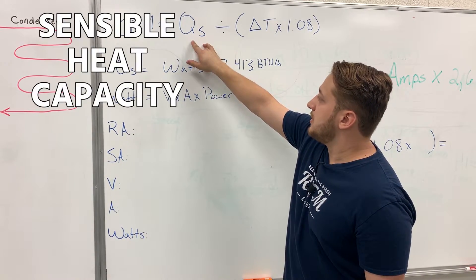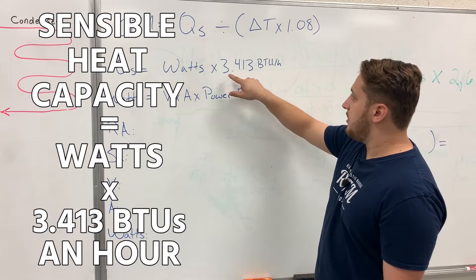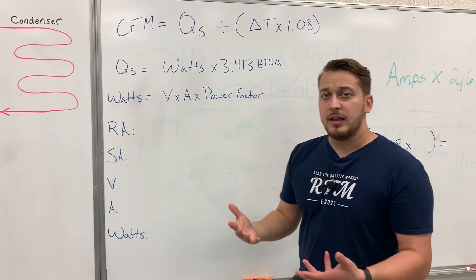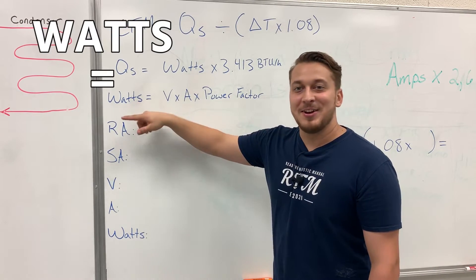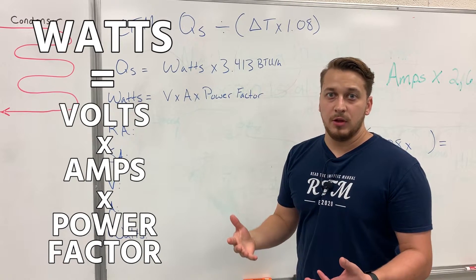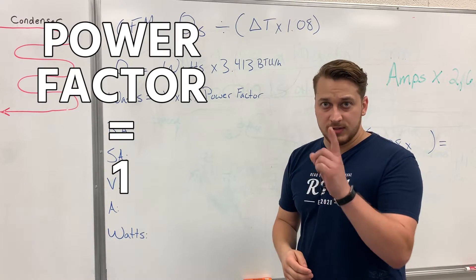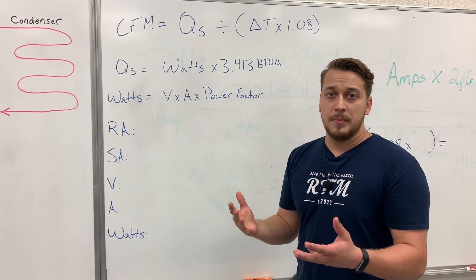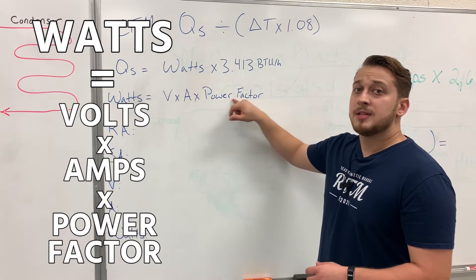To calculate sensible heat capacity, it's watts times 3.413 BTUs per hour, since there are 3.413 BTUs in one watt. To calculate watts, we're using electric heat — a resistive load. The formula is volts times amps times power factor. Because it's resistive and not inductive, there's no reactive power, so the power factor equals one (unity). We'll keep it in the formula to remain precise: watts equals volts times amps times power factor.